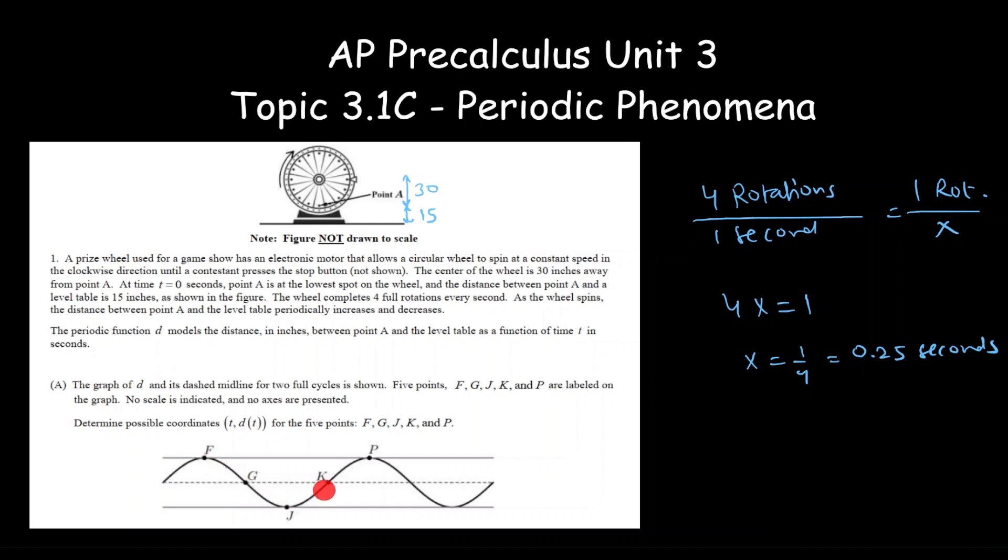Again, a situation is given that models the distance between A and the label table, and we need to figure out what the possible coordinates of these five points are. At t equal to 0, I know that the minimum distance, minimum height of point A is 15. Minimum is represented by J, so it has to be something comma 15.